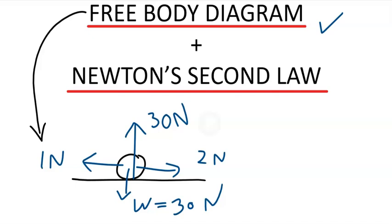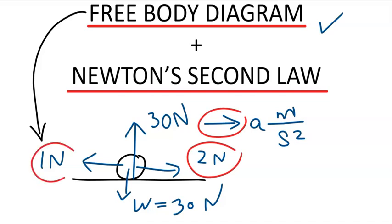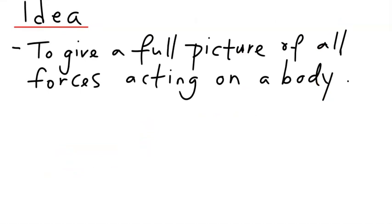You also have to label the acceleration in meters per second squared. The motion of this object is to the right, and the two forces — one to the right and one to the left — combine to get the net force, which can then be related to the acceleration of the body. This is how a free-body diagram leads to net force, which is associated with Newton's second law.